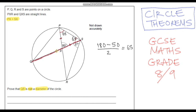Now I can see that this angle subtends the circumference at two points, and this other angle subtends the circumference at exactly the same two points. Therefore these two angles are equal — that's one of our circle theorems: angles in the same segment are equal. So this angle is also 27 degrees.